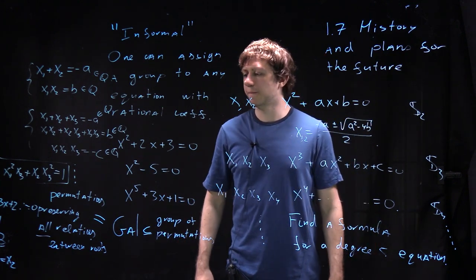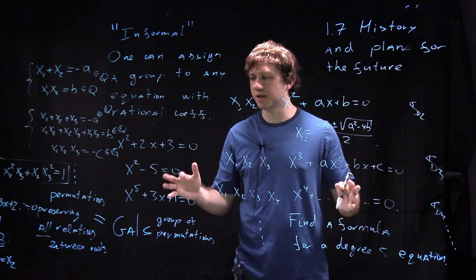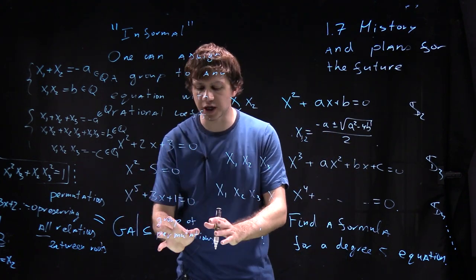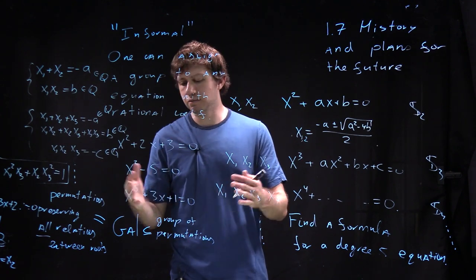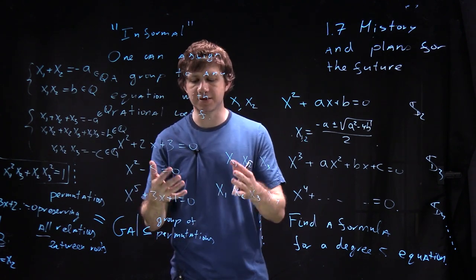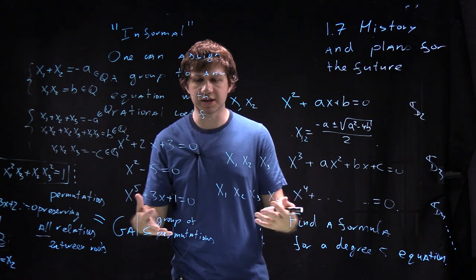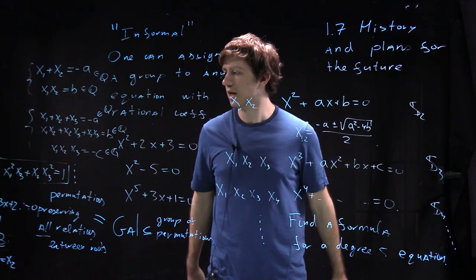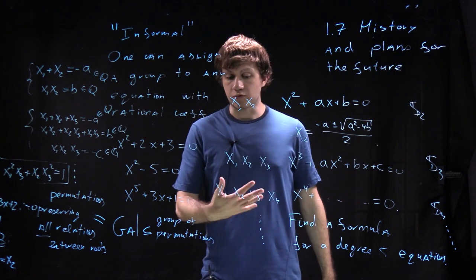And so this is how the whole subject started but after people understood that this is an object to look at and permutations are important soon enough it became clear that actually there are much more down to earth examples of this phenomena related to the symmetries of polytopes and so on and now of course we teach it backwards.